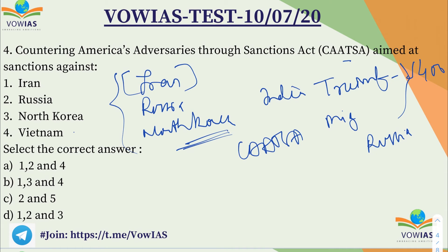Further categories include export pipelines privatization of state-owned assets, and arms transfers to Syria. If you fall into these categories through dealings with Iran, Russia, or North Korea, you are liable under CAATSA. So the answer includes options 1, 2 and 3.